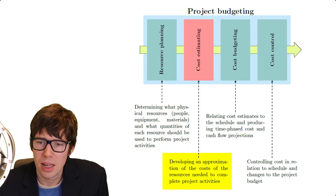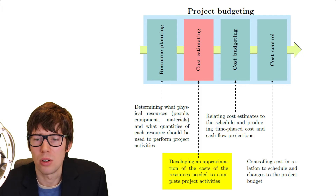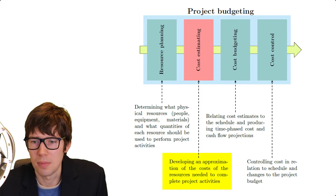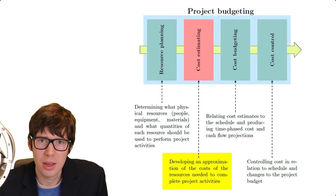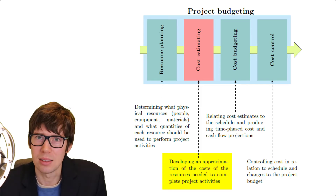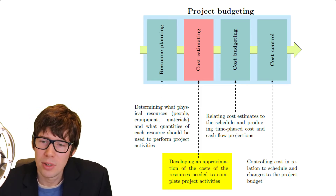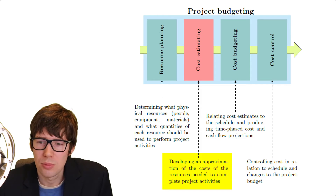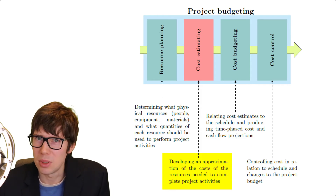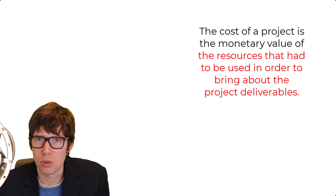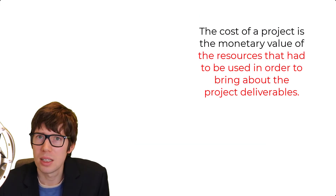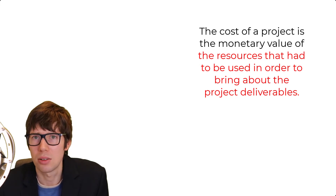Once you have that, you can proceed to the second stage of project budgeting, and that is cost estimation. The definition of cost estimation is a bit circular — basically, cost estimation is about estimating the cost. The cost of a project is the monetary value of the resources that we needed to expend in order to bring about the project deliverables. This connects very nicely to resource planning.